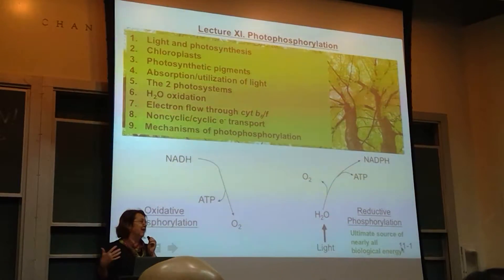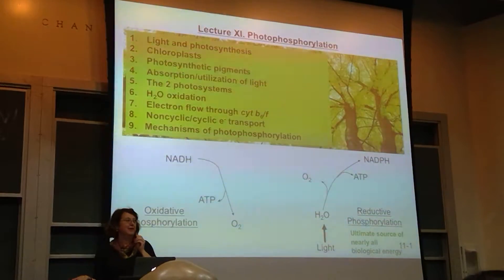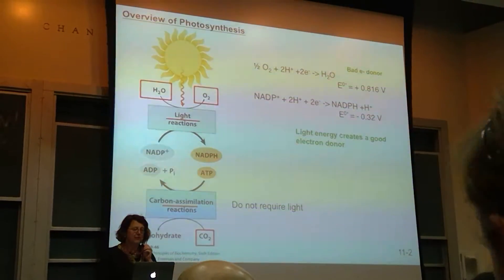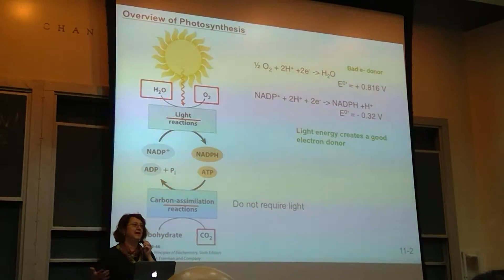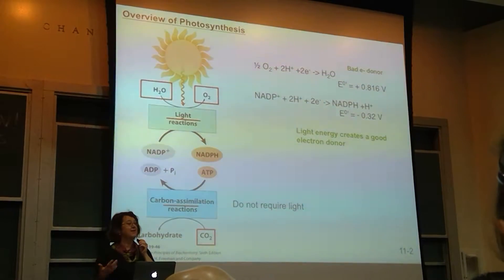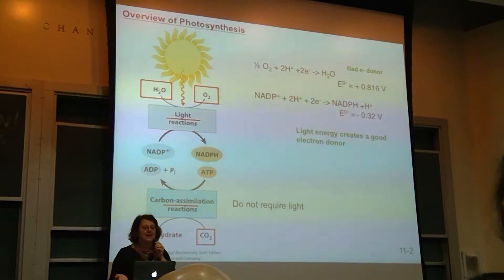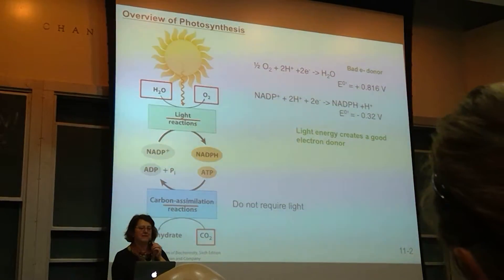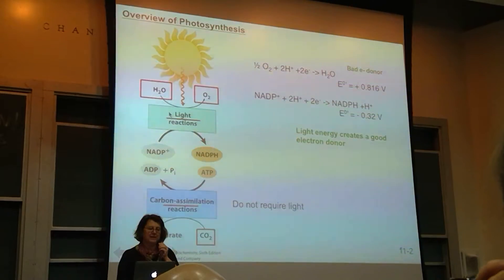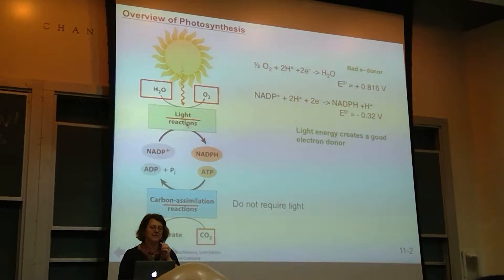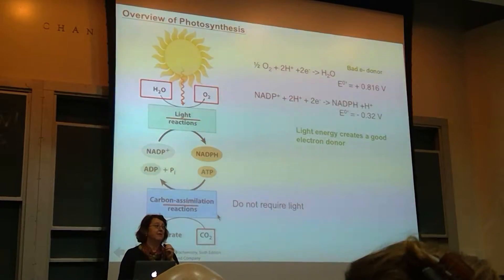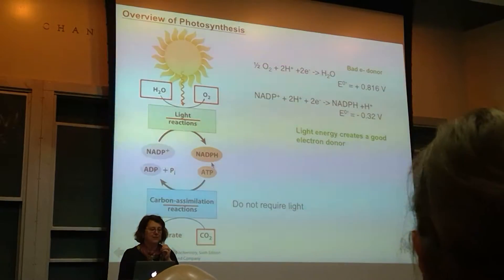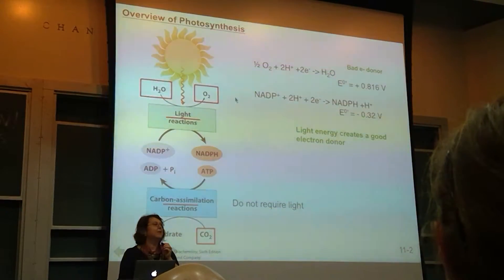It's not just that I love plants — this is critical to life on Earth. In an overview of photosynthesis, hopefully you've been exposed to this in high school and then in Bio 1A or B. Essentially there are two sets of reactions: the light reactions and the carbon assimilation reactions, which sometimes people call the dark reactions because they don't require light. However, they require products from the light reactions.